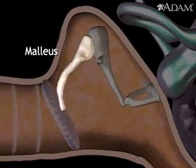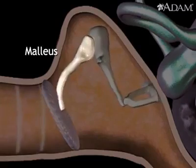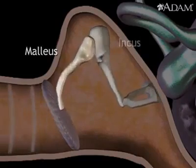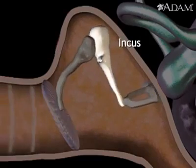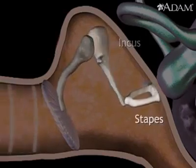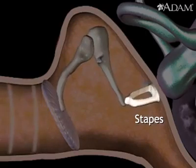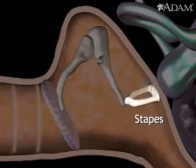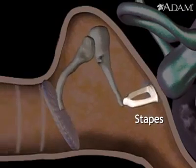Also called the hammer, the malleus transmits sound vibrations to the incus, which passes them to the stapes. The stapes pushes in and out against the structure called the oval window.